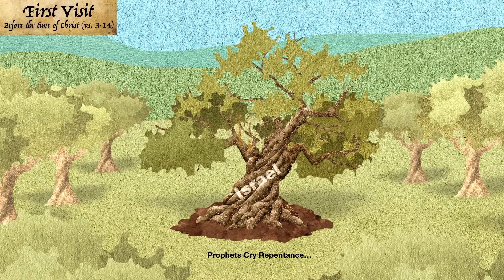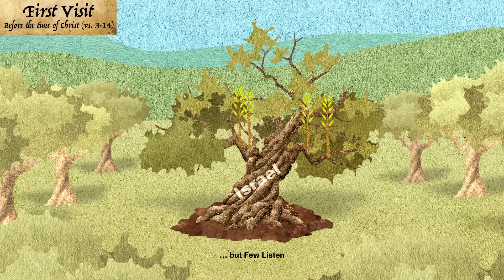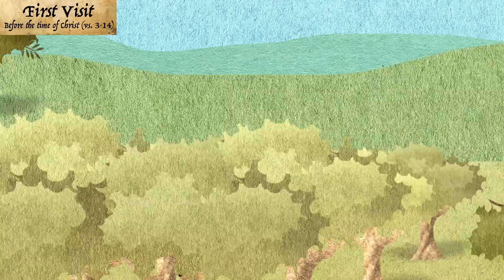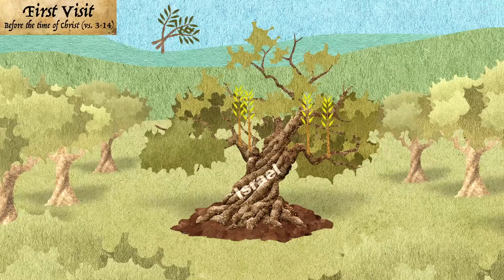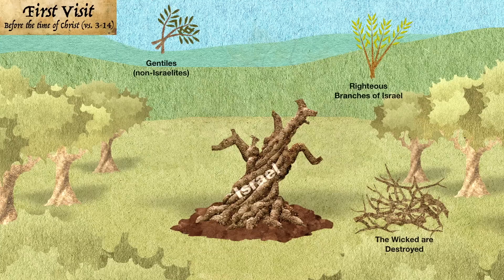And it came to pass that after many days it began to put forth somewhat a little young and tender branches. But behold, the main top thereof began to perish. And the master saw it, and he said unto his servant, It grieveth me that I should lose this tree. Wherefore go and pluck the branches from a wild olive tree, and bring them hither unto me. And we will pluck off those main branches which are beginning to wither away, and we will cast them into the fire, that they may be burned. Behold, I take away many of these young and tender branches, and I will graft them whithersoever I will. And it mattereth not that if it so be that the root of the tree will perish, I may preserve the fruit thereof unto myself.